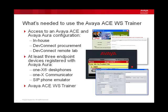You also need at least three endpoint devices in your environment registered with Avaya Aura. These can be, for example, Avaya OneX desk phones if you have them, or you can download the OneX Communicator soft phone from the Avaya support site, or, as in this video guide, use separate instances of the OneX SIP desk phone emulator, which you can download from the DevConnect portal.